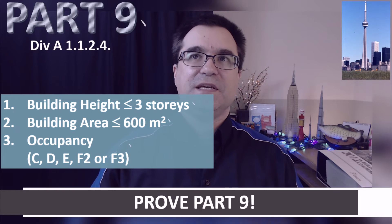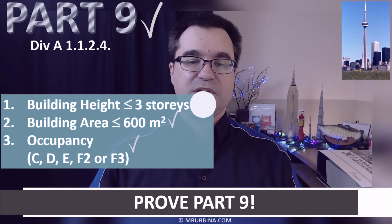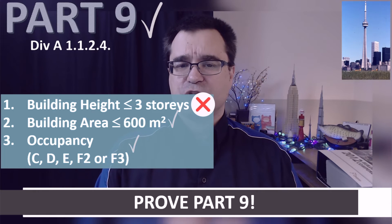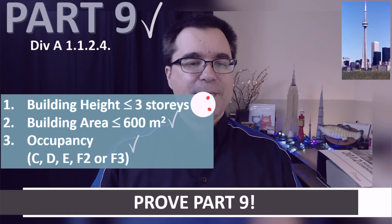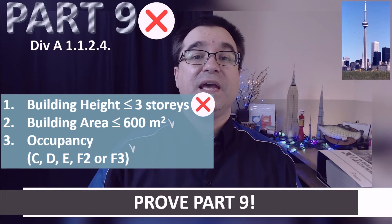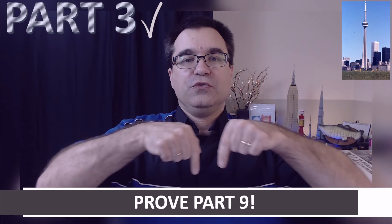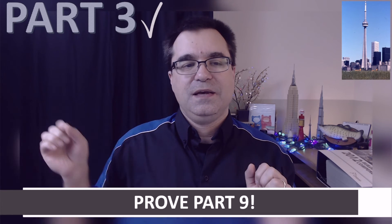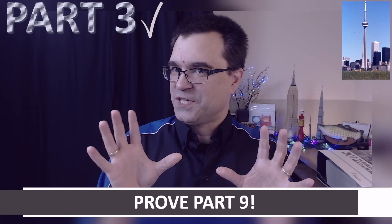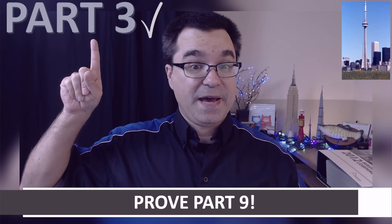Here's why this method is great and always works. Let's pretend that one of these does not work — let's say building height is actually more than three stories. Automatically, even if the other two are correct, this building is not a Part 9 building. It's automatically a Part 3 building. And you didn't even have to prove that it's a Part 3 building. Simply because you could not prove that it's Part 9 automatically makes it a Part 3 building. You see how subtle this is? Prove that it's Part 9. If you cannot — if even one of those three conditions fails — it's automatically a Part 3 building.